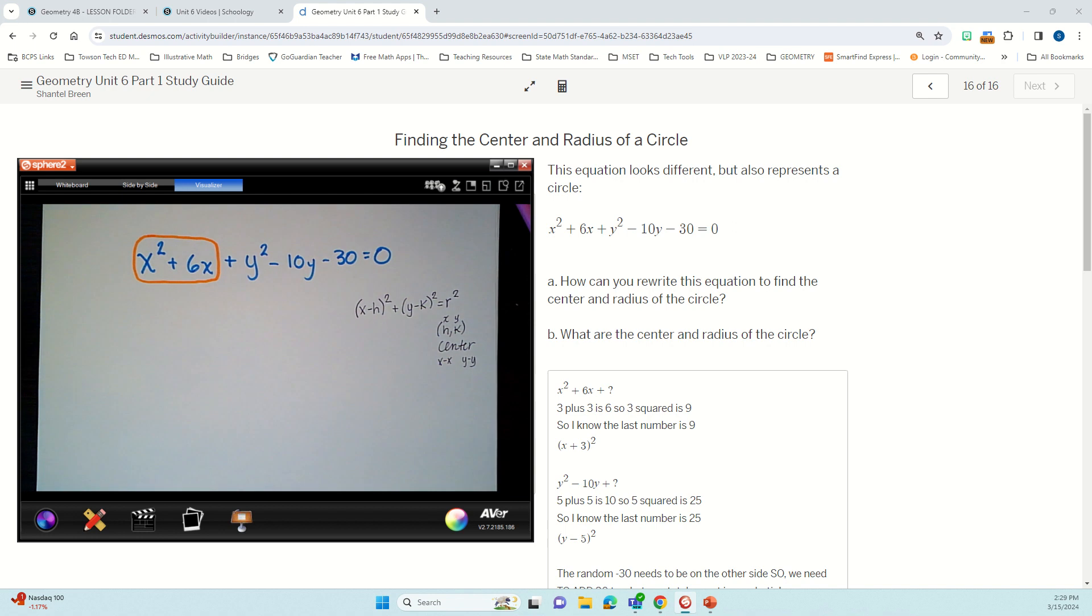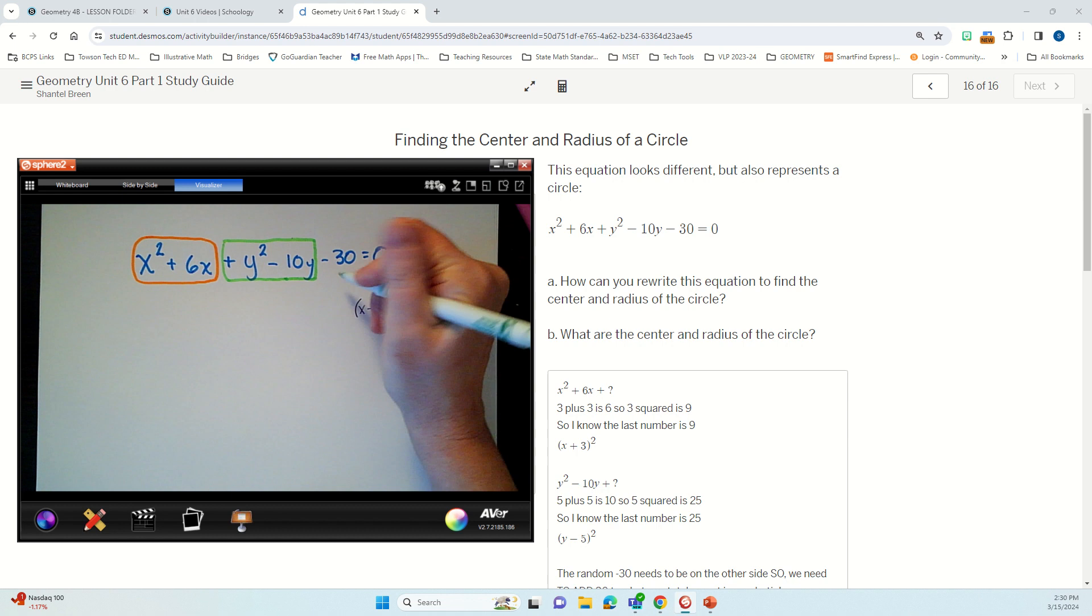So there's the one, and then I have another side of my equation that's missing the other part. See that? So I have y squared minus 10y, but I'm missing the something squared. Then I have this random negative 30 that I'm going to have to move to this side of the equation.